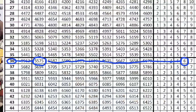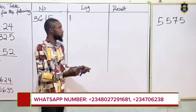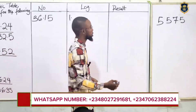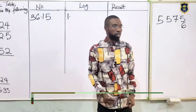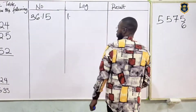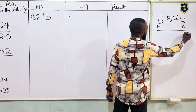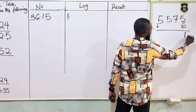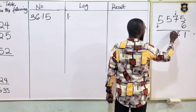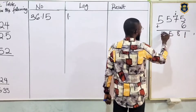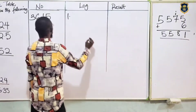Now what about the difference of 5? Because what we have here is 36 under 1, difference 5. If you check your log table you'll see that the difference of 5 is 6. What do we do? We add each and every one of them — 6 plus 5 gives us 11, put 1 carry 1. 7 plus 1 becomes 8, so we have 5581.